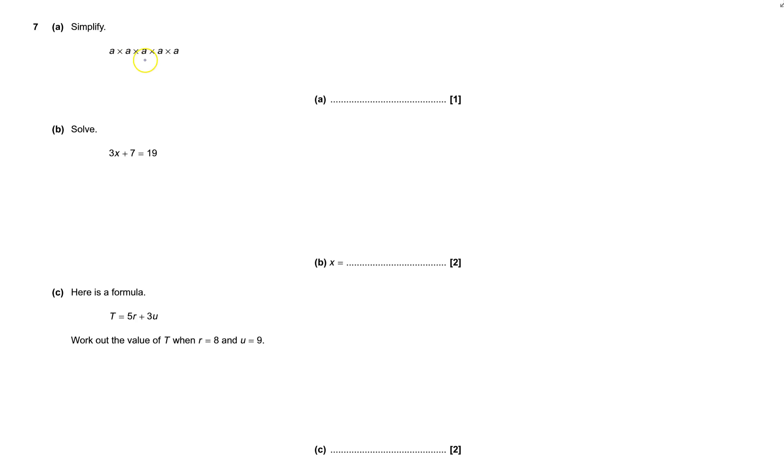Let's simplify this. It's a to the power of something, and I've got 1, 2, 3, 4, 5. That'll be a to the power of 5.